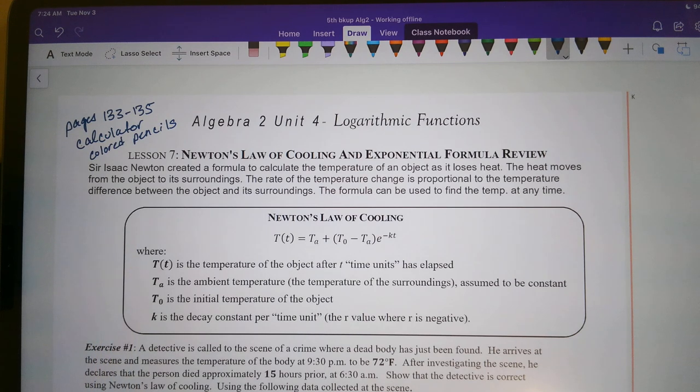Lesson seven, Newton's law of cooling and exponential formula review. Sir Isaac Newton created a formula to calculate the temperature of an object as it loses heat. The heat moves from the object to its surroundings. The rate of the temperature change is proportional to the temperature difference between the object and its surroundings. The formula can be used to find the temperature at any time. So here we have this formula: T(t) = T_a + (T_0 - T_a) * e^(-kt). The good thing is you do not have to memorize this formula. It would be given to you along with the notes where T(t) is the temperature of the object after t time units has elapsed. T_a is the ambient temperature, which is also the temperature of the surroundings and is assumed to be constant. T_0 is the initial temperature of the object, and k is the decay constant per time unit.